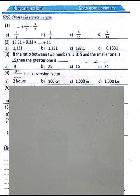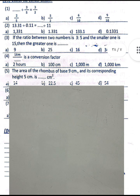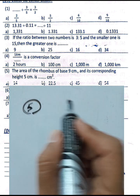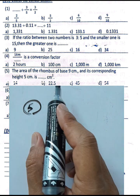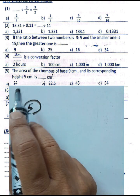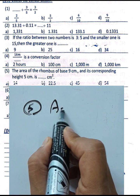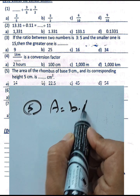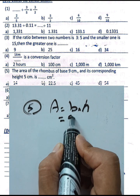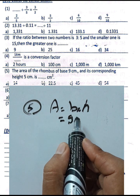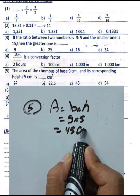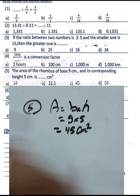Question number five: find the area of a parallelogram with base 9 centimeters and corresponding height 5 centimeters. Area equals base times corresponding height: 9 times 5 equals 45 square centimeters.